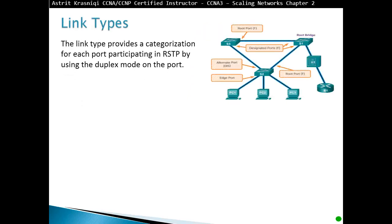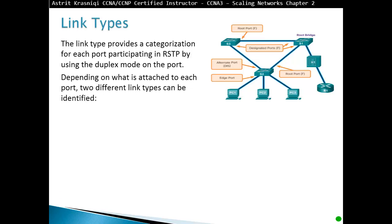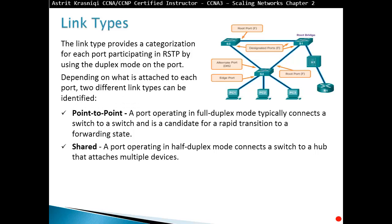Link type provides a categorization for each port participating in RSTP based on the duplex mode of that port. Two link types can be identified: point-to-point, which is a port operating in full-duplex mode typically connected switch-to-switch and is a candidate for rapid transition to forwarding state; and shared, which is a port operating in half-duplex mode connecting a switch to a hub that attaches multiple devices.